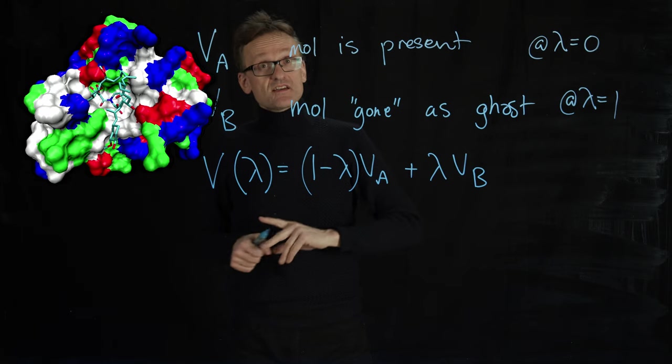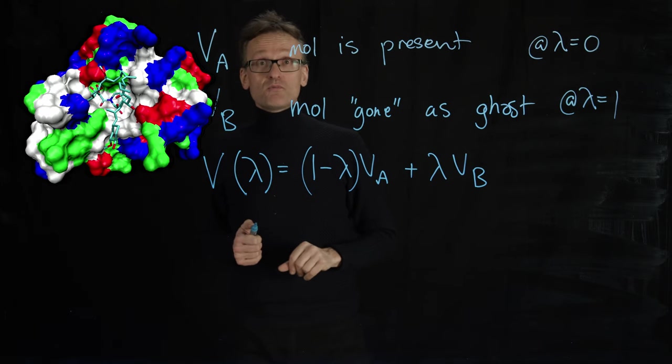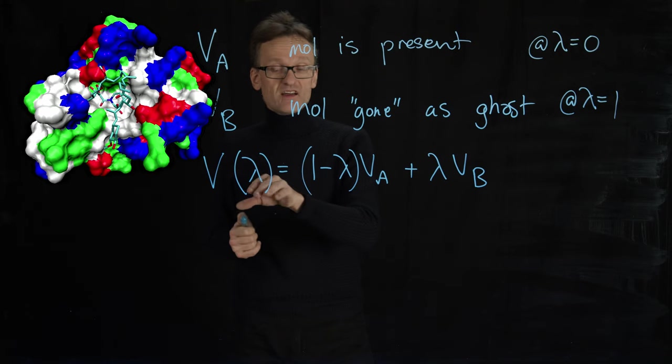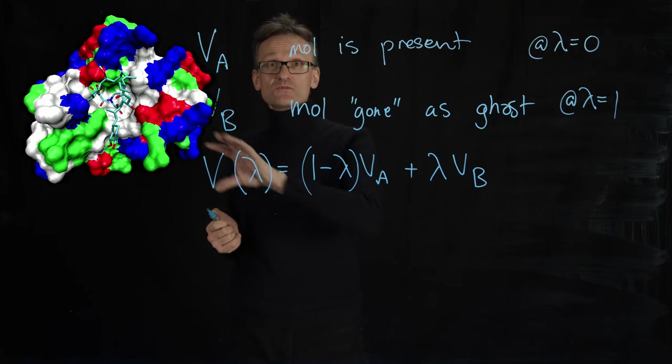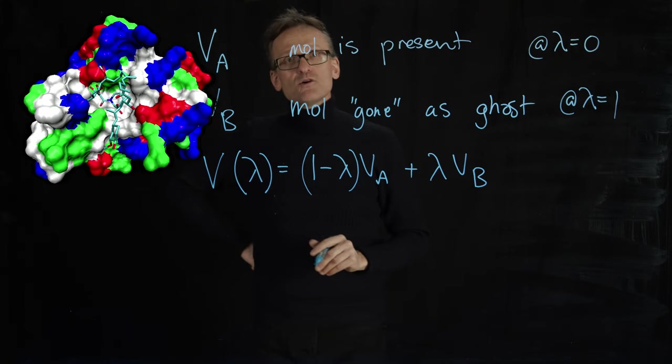So this now means that I can simulate the system at many different points, maybe pick ten points between zero and one here, and gradually force this molecule to disappear. How is that going to be useful?